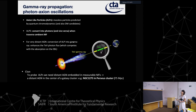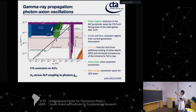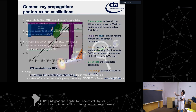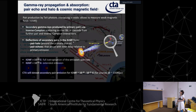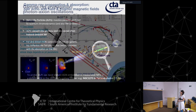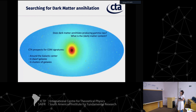CTA will also be able to put constraints on axion-like particles (ALPs) predicted by quantum chromodynamics theory. This parametric space diagram shows CTA's constraints for these axion-like particles - the coupling factor g_{Aγ} as a function of ALP mass - which will be discussed in more detail by Manuel.